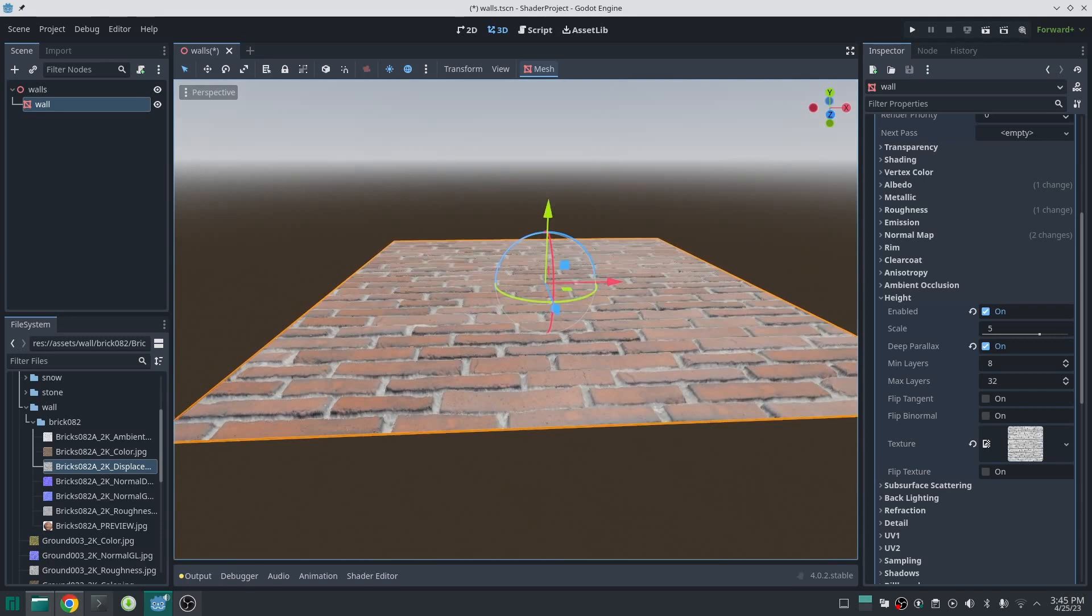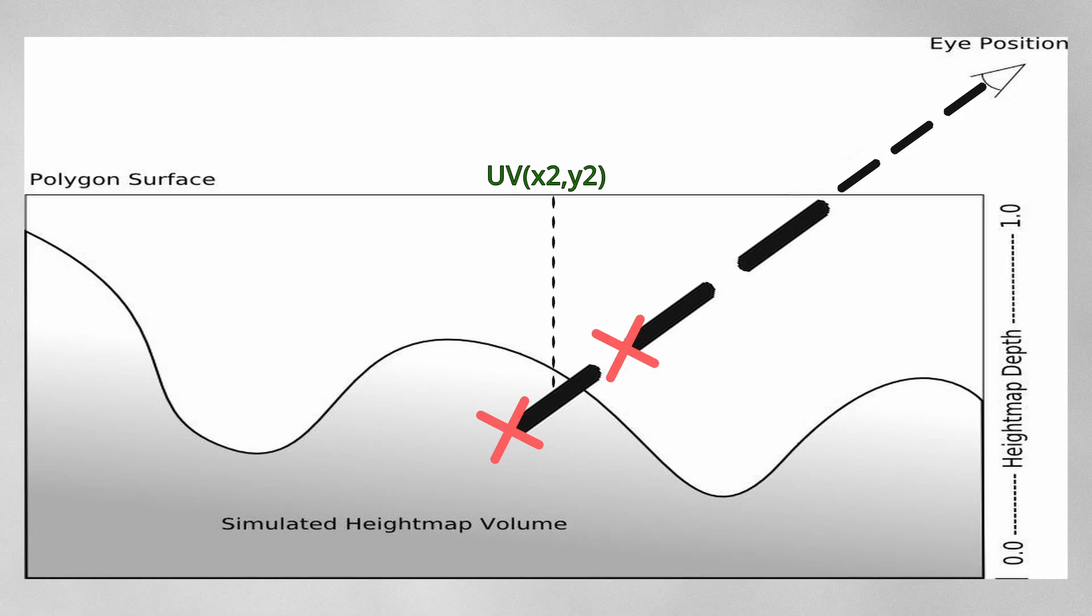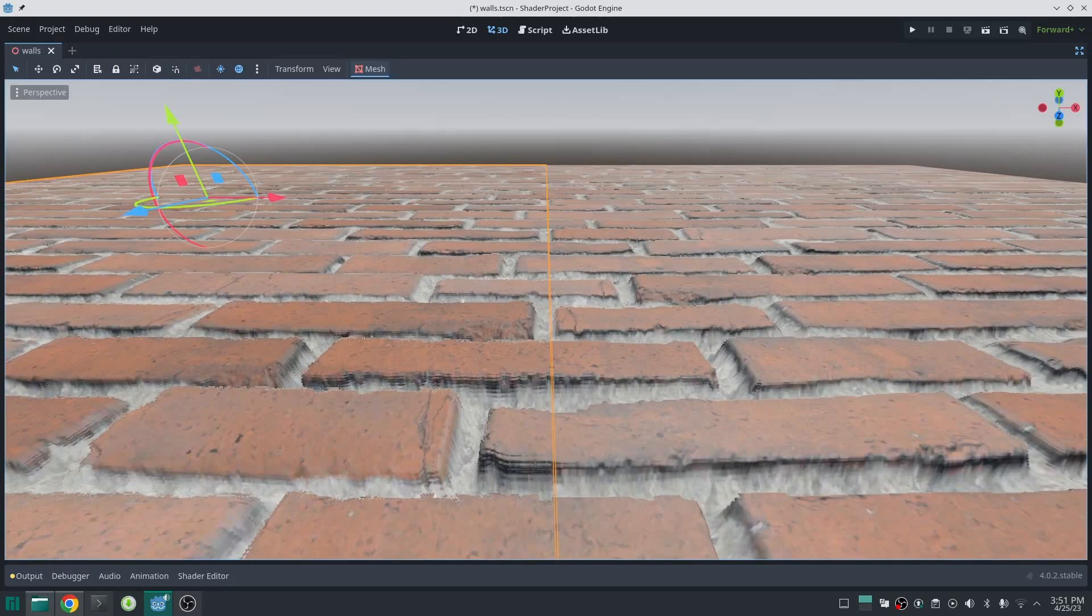I really suggest to not use really high resolution height map images. As you can see we just approximately calculate the intersection point, and because of this inaccuracy if you use height map texture with a lot of detail you will have some artifacts. For example, look at the wall on the left.